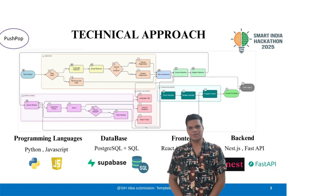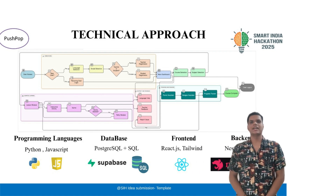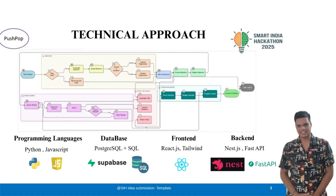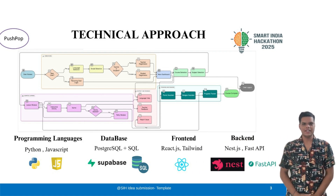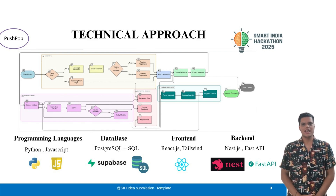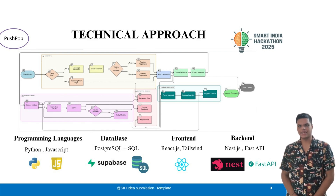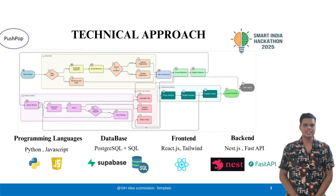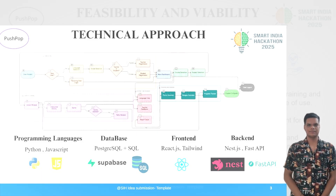Now, coming to the most important part, that is the tech stack. For frontend, we have ReactJS and Tailwind CSS. For backend, we have NestJS and FastAPI. And for storage, we are using Supabase.